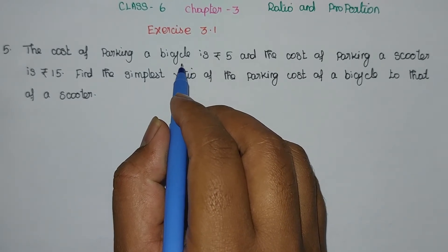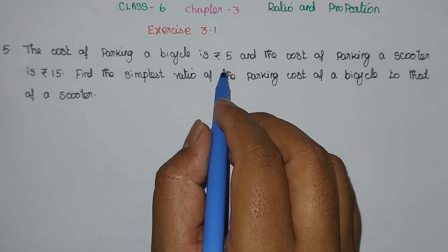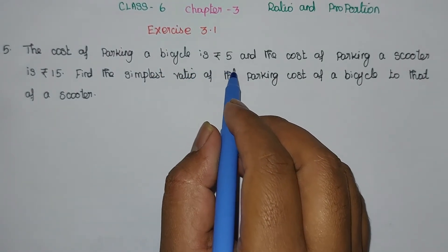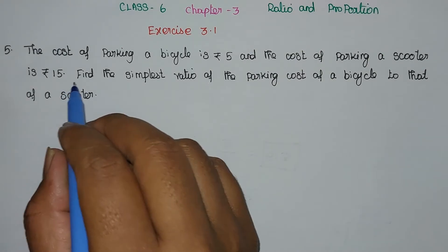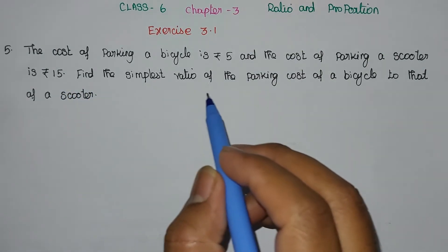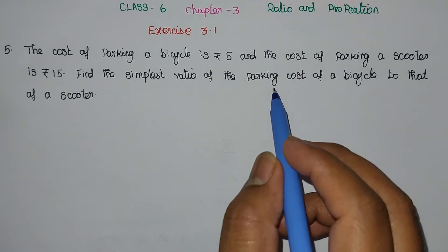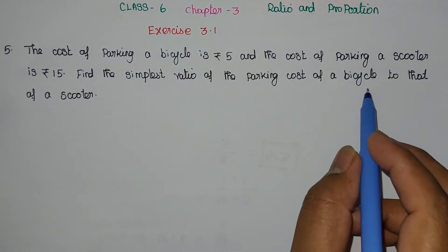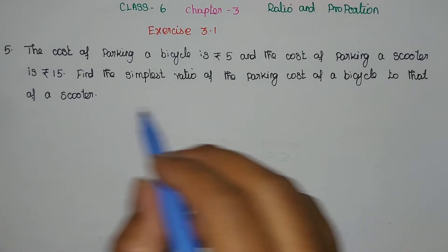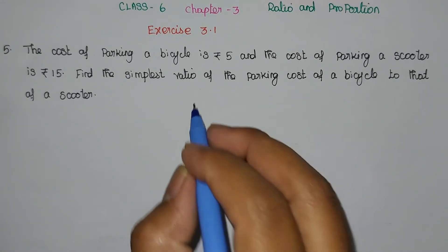Bicycle parking cost is Rs. 5, scooter parking cost is Rs. 15. This is the simplest ratio of the parking cost of a bicycle to that of a scooter.